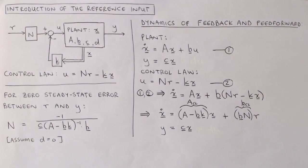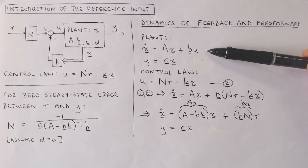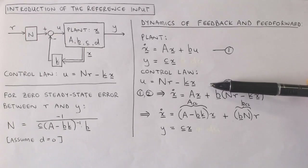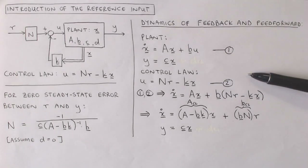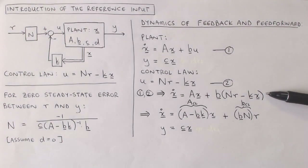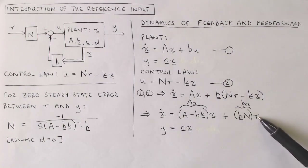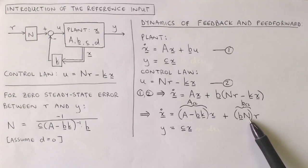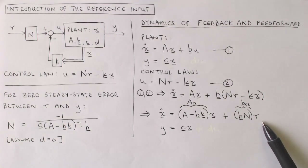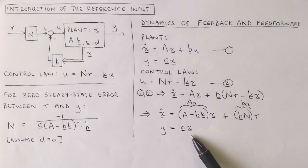We can now combine the plant model with the state feedback and reference feed forward to obtain a state variable model of the full system. The plant dynamics is described by the normal state equation and the control law is described by this equation. For the output equation we assume d equals zero. By combining equations one and two and gathering terms containing x, we can write the state equation of the full system. We recognize this as a normal state equation where a minus b k is the new a matrix, b times n is the new b vector, and the reference input r is the input to the full system. The output equation is unchanged.